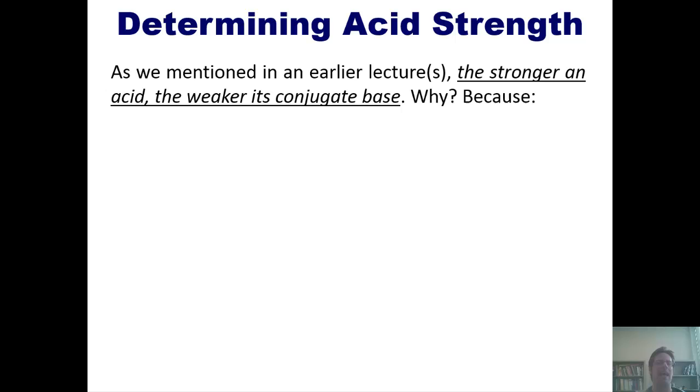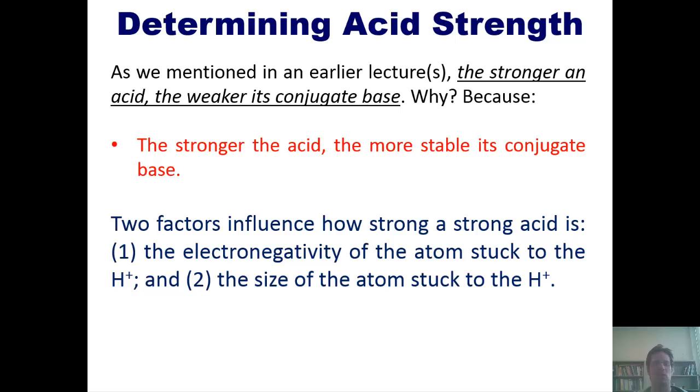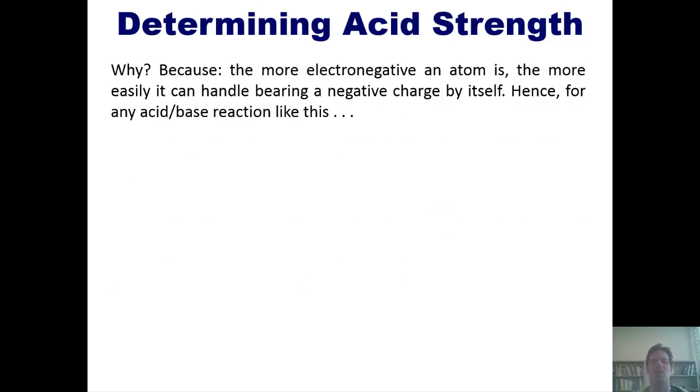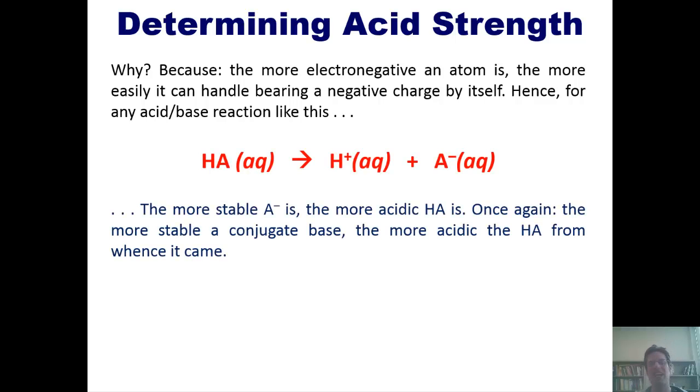Now to another subject, determining acid strength. As I mentioned in an earlier lecture, the stronger an acid, the weaker its conjugate base. Why? Well, the reason is because the stronger the acid, the more stable its conjugate base. Two factors, then, influence how strong an acid is. First, the electronegativity of the atom stuck to the H+, and second, the size of the atom stuck to the H+. Why? Well, the answer is because the more electronegative an atom is, the more easily it can handle bearing a negative charge by itself. Hence, for any acid base reaction, such as this one, the more stable A- is, the more acidic HA is.